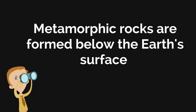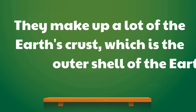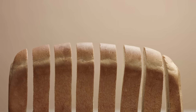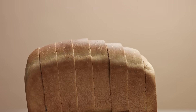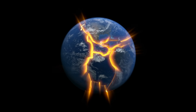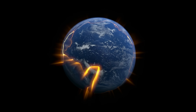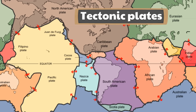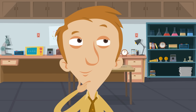Metamorphic rocks are formed below the Earth's surface, and they make up a lot of the Earth's crust, which is the outer shell of the Earth. You can see that the Earth's crust is broken up into pieces that almost look like puzzle pieces — scientists call these tectonic plates. These huge plates move and push against each other, and there is a lot of heat and pressure there. That's why there are so many metamorphic rocks that form in and around the Earth's crust.